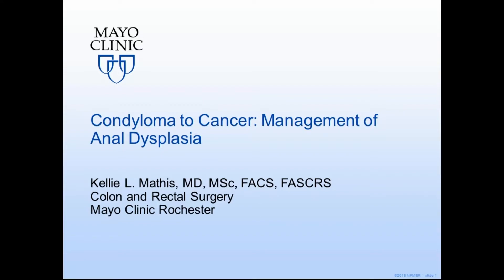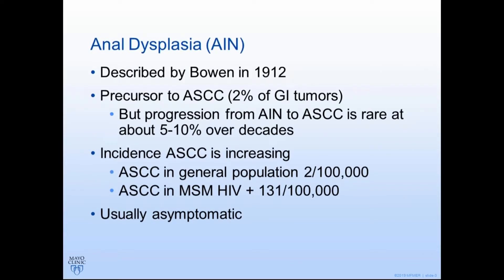Good morning and I'd like to thank the course organizers, Dr. Laughlin in particular, for the invitation. I have no disclosures. Anal dysplasia was first described by Dr. Bowen in 1912 and we know it's a precursor to anal squamous cell cancer. Anal squamous cell cancer is a rare GI tumor, accounting for only 2% of those that we see. Progression from AIN to actual cancer is also rare, occurring in only 5-10% of dysplastic patients, and it takes decades for that to happen.